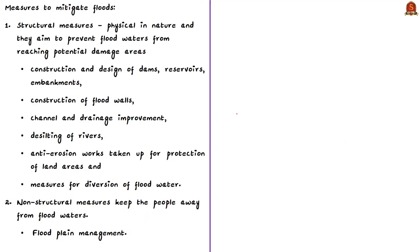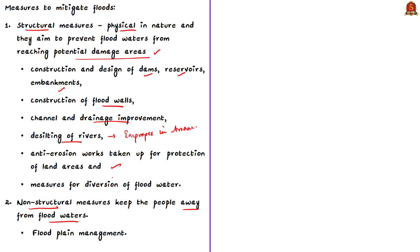Flood mitigation measures aim to reduce the severity of floods and are classified into structural and non-structural measures. Structural measures are physical in nature and aim to prevent flood waters from reaching potential damage areas. These include construction and design of dams, reservoirs, and embankments, as well as construction of flood walls, channel improvement, and desilting of rivers. Today's news article also criticizes that the silting nature of rivers in Assam is not properly studied.